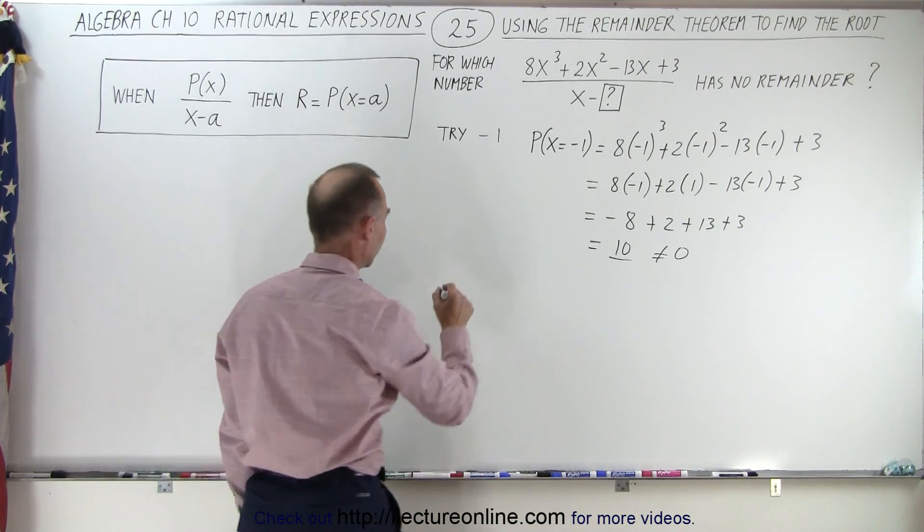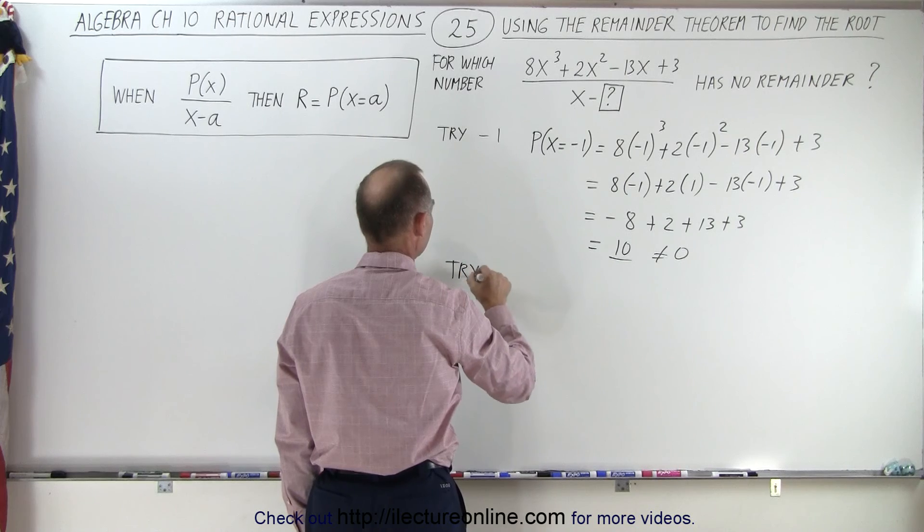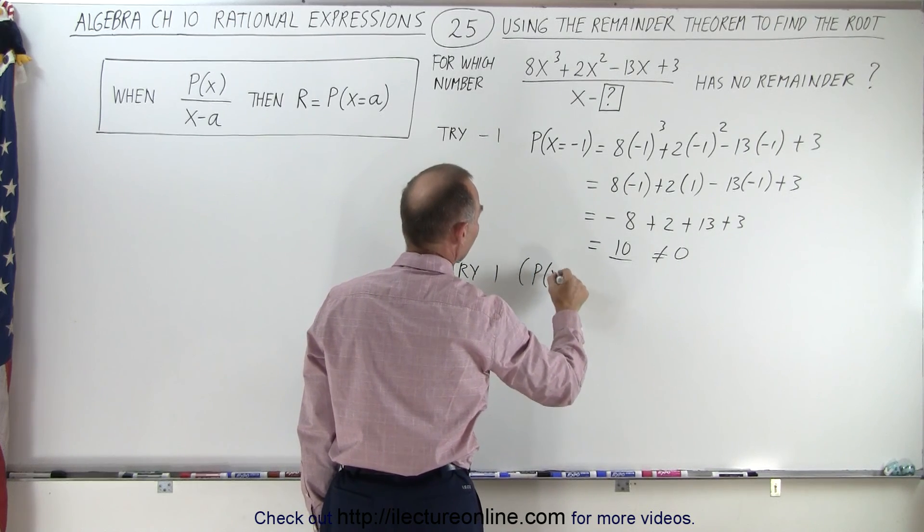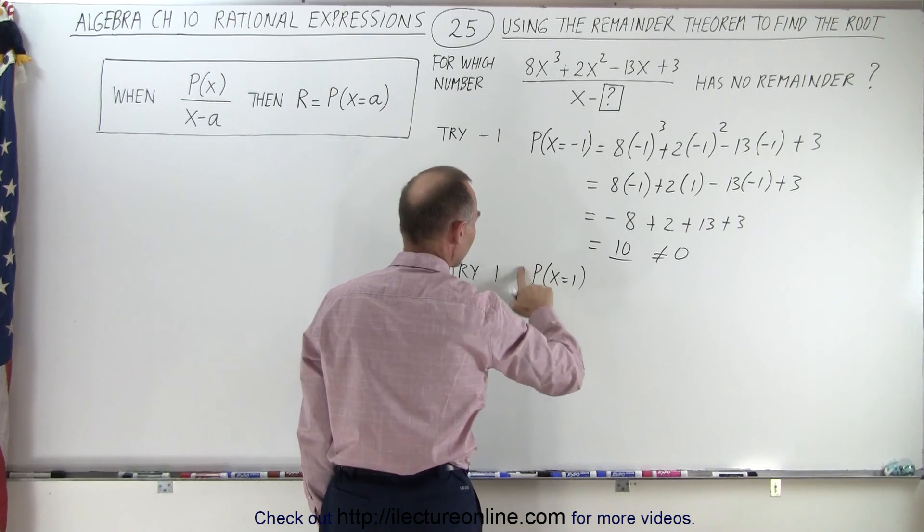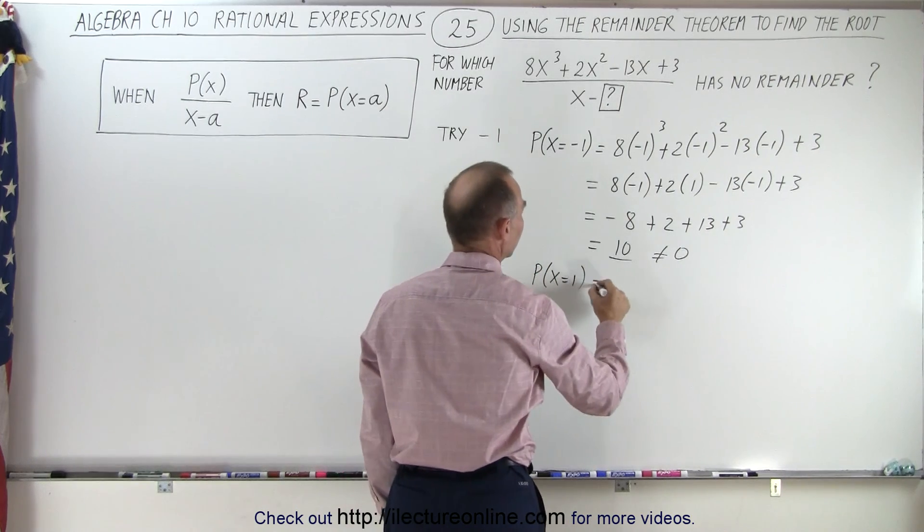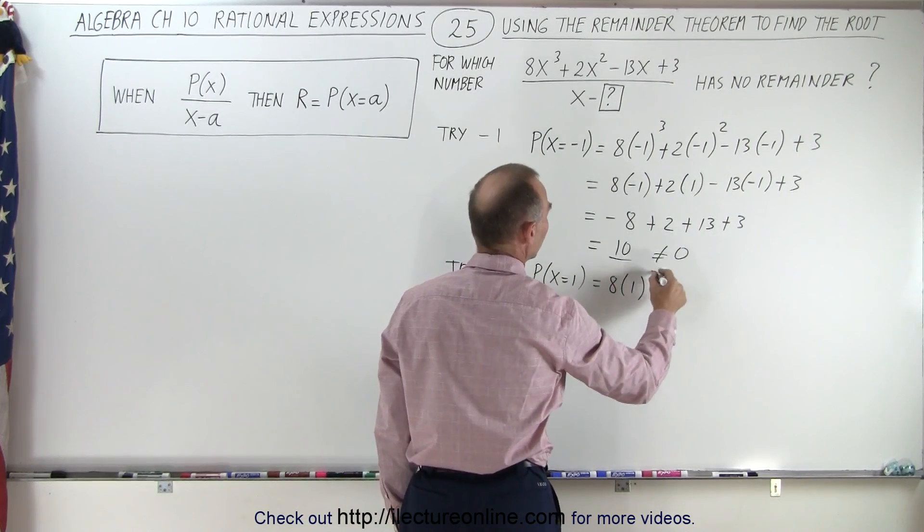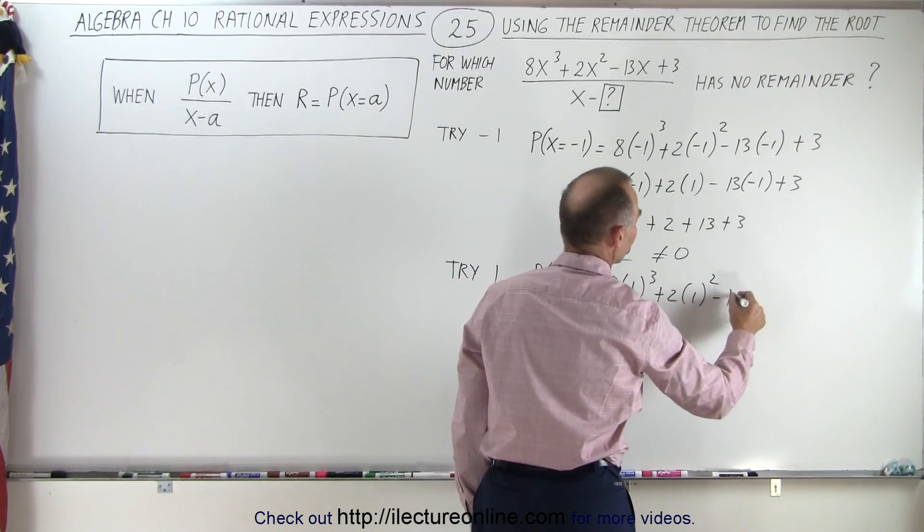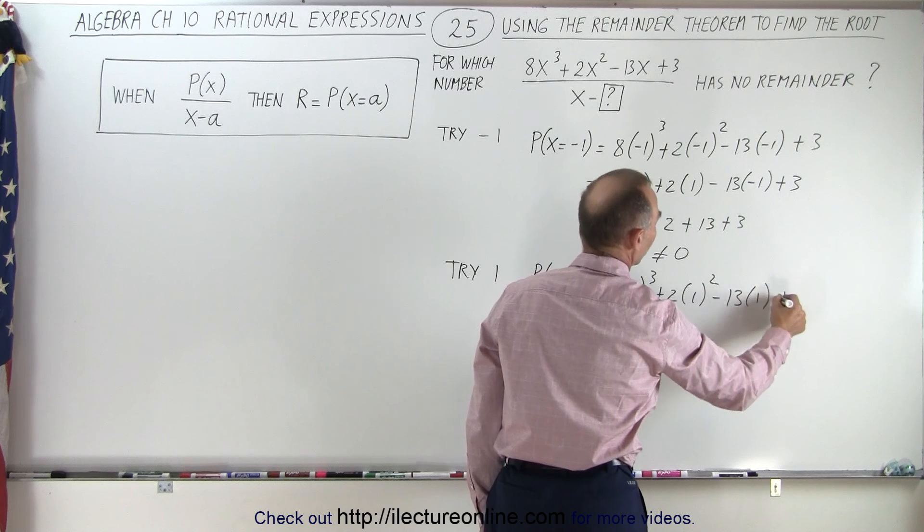So let's try another one. Let's try positive 1. So the polynomial evaluated at x equals positive 1, and we don't need this parenthesis right here, that is equal to 8 times 1 cubed plus 2 times 1 squared minus 13 times 1 plus 3.